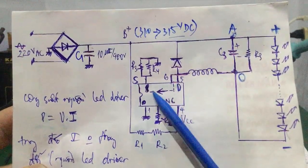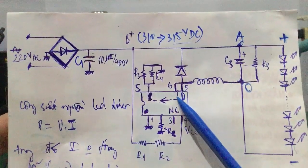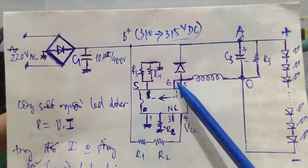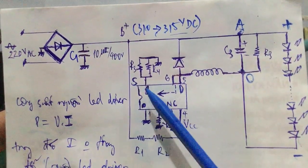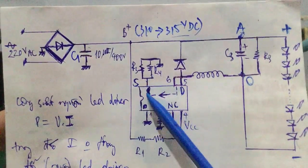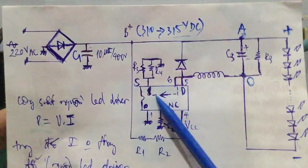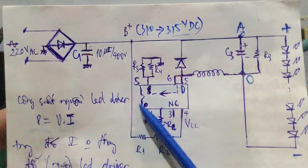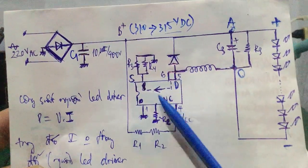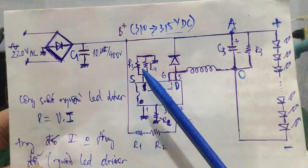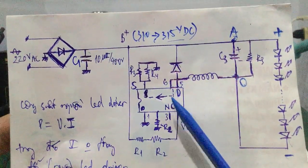IC không hoạt động liên tục, bên trong nó có một MOSFET. Chân 5, 6 là cực D, MOSFET là chân 8, chân 7, 8 là cực S của MOSFET. Nó sẽ ngắt dẫn, ngắt dẫn - tức là IC này hoạt động không liên tục, nó ngắt dẫn, ngắt dẫn - đây là IC dao động.